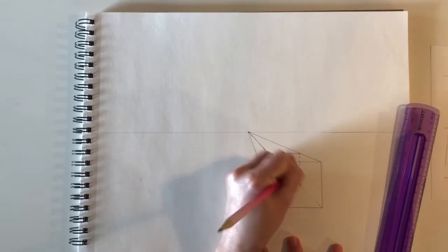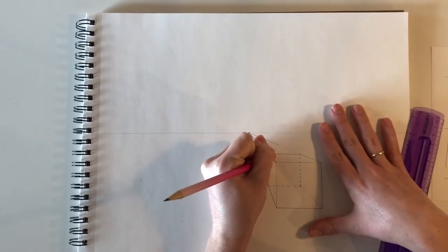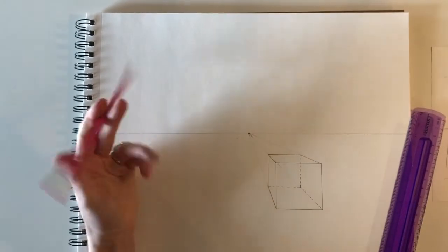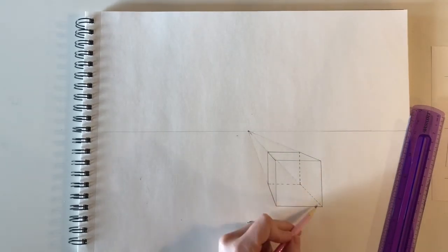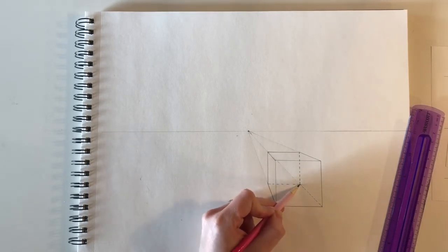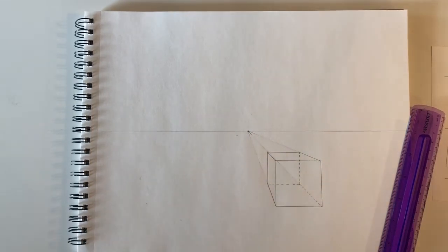Last but not least, you can erase all your extra diminishing lines. For this line in particular, which is sometimes a little confusing, I only need the dotted diminishing line from the front corner to the back corner. Any dots that take place after that I can erase. That's your basic cube in one-point perspective.